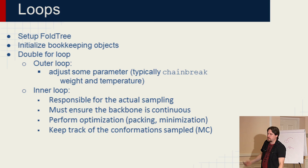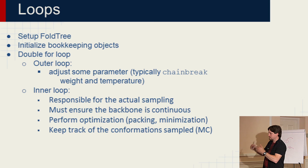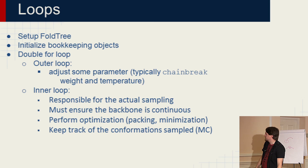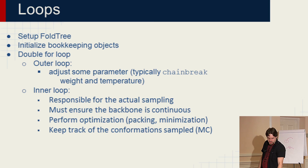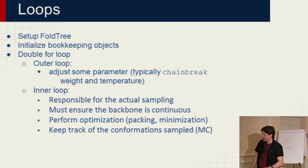Generally, a loop mover is going to set up your FoldTree — it's really important to have a cut point and jumps connecting things correctly. You need to initialize whatever bookkeeping objects you're dealing with. Then you generally have a nested loop: an outer loop where you adjust parameters such as a chain break weight or a temperature, and an inner loop that is responsible for doing the actual sampling and also ensuring the backbone is continuous. Things like packing and minimization also occur in the inner loop, and we use the Monte Carlo object to keep track of all the various conformations sampled.